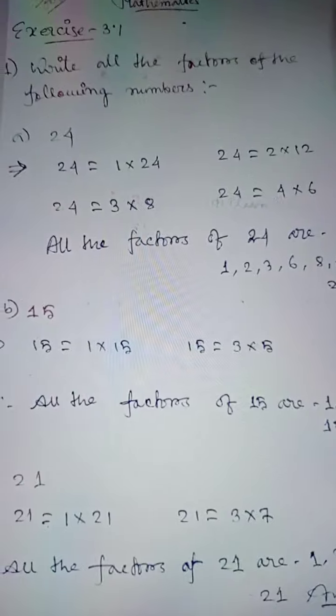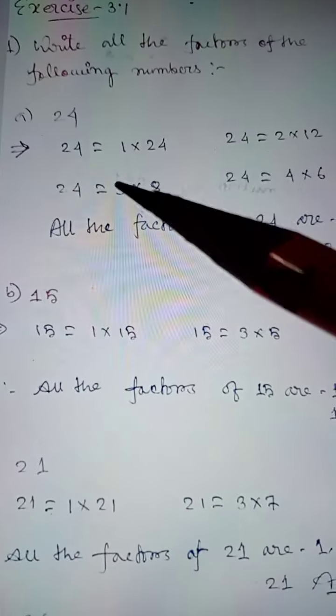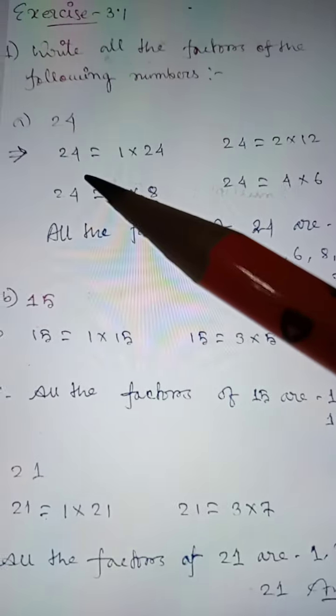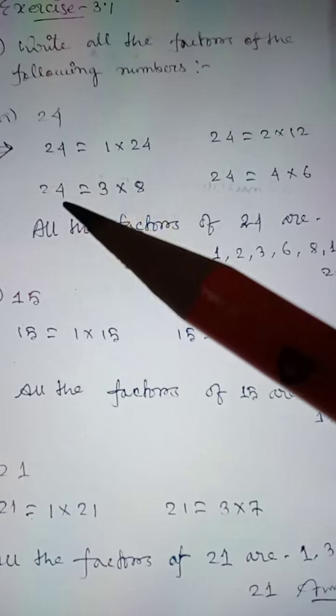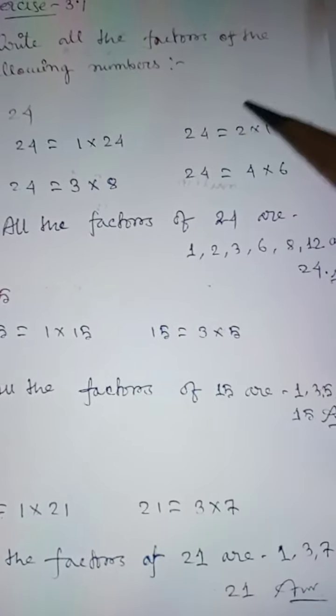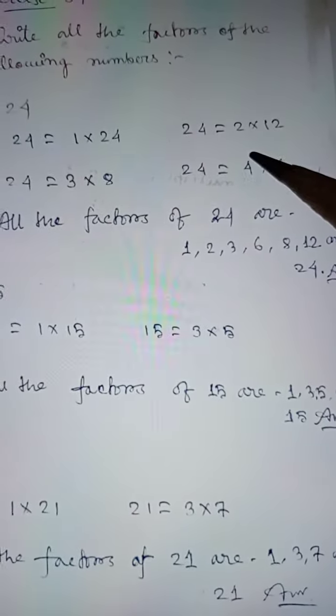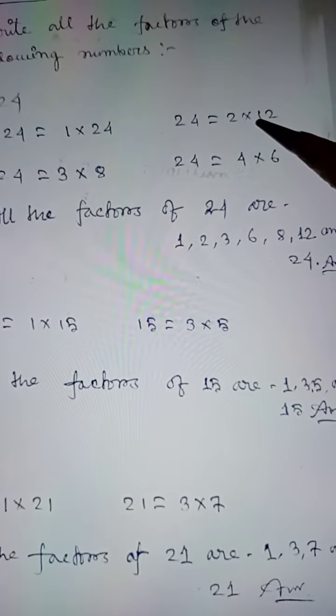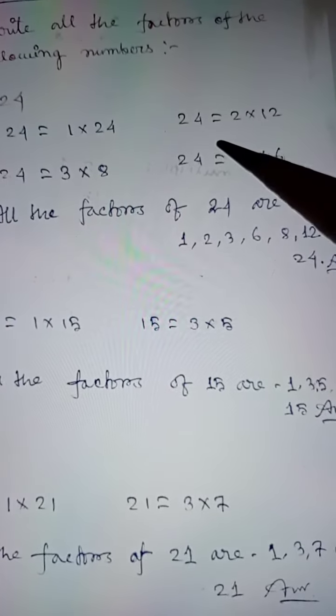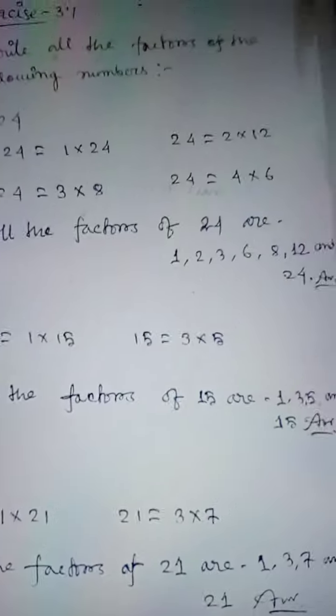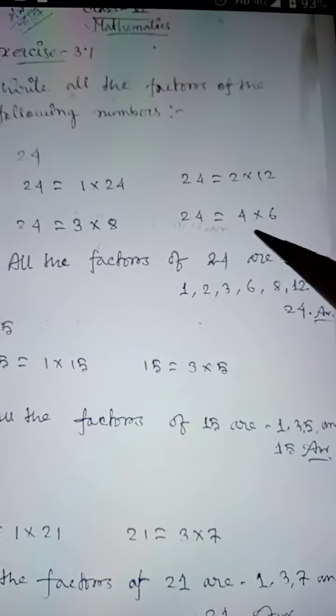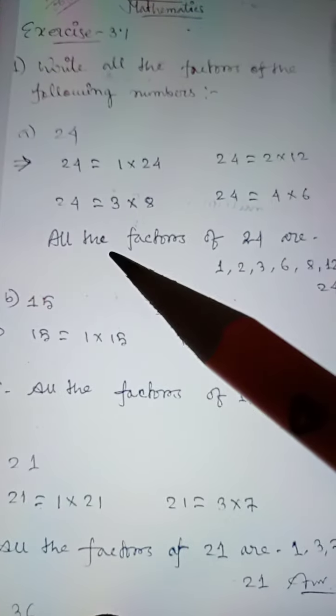Factors of 24: 24 equals 1 times 24, 24 equals 3 times 8, 24 equals 2 times 12, and 24 equals 4 times 6.